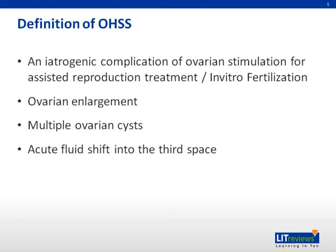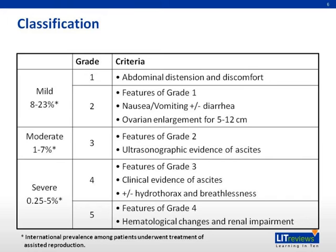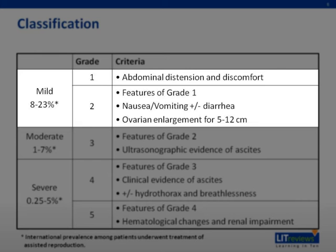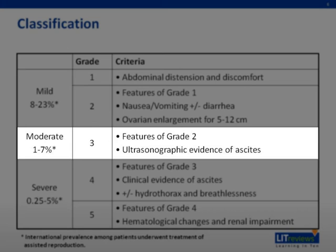Based on its clinical presentation, ovarian hyperstimulation syndrome is divided into mild, moderate, and severe. 8 to 23% of the patients who undergo treatment of assisted reproduction present with mild ovarian hyperstimulation syndrome. 1 to 7% present with moderate, and 0.25 to 5% present with severe.